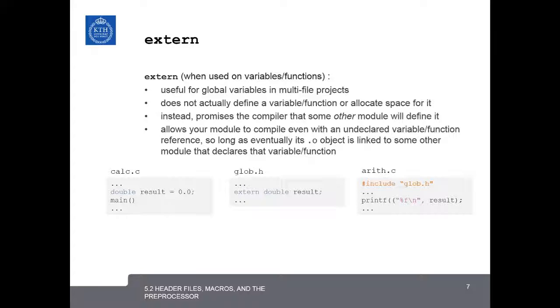It's useful to quickly look at how we can use header files along with the extern keyword to handle global variables in multi-file projects. So, if you remember from our previous example with the calculator, we defined a global variable in calc.c, where the result of the calculation was a global variable defined before the main function. We also created a .h file, where we declared that this was an external double, and the name of the variable was result. Then, in the other functions, like Arith.c, we included that .h file, and we were able to use the variable as if it was a global variable. The extern keyword is useful for global variables in multi-file projects, but it does not actually define a variable or allocate space for it. Instead, it promises the compiler that some other module will define it. In this case, calc.c was defining the result. It allows your module to compile even when an undeclared variable or function is referenced, so long as eventually its .o object is linked to some other module that does declare a declaration for the variable or function.